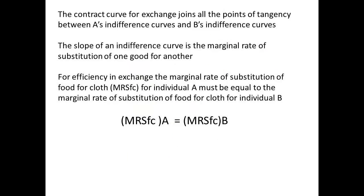The contract curve for exchange joins the points of tangency between A's indifference curves and B's indifference curves. Remember that the slope of an indifference curve is the marginal rate of substitution of one good for another. So, for efficiency in exchange, the marginal rate of substitution of food for cloth for A must be the same as that for B. We can say that the marginal rate of substitution of food for cloth for A is equal to the marginal rate of substitution of food for cloth for B.